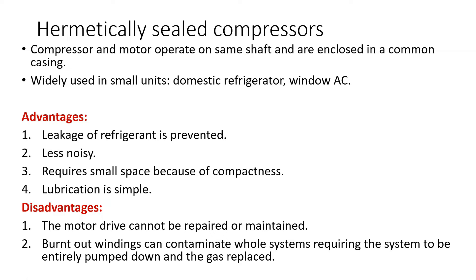The most important type is the hermetically sealed compressor, mostly seen in small units such as domestic household refrigerators, window AC units, and hospital AC systems. In this type, the compressor and motor operate on the same shaft and are enclosed in a common casing. We will come back to the slide after seeing the hermetically sealed compressor construction first.